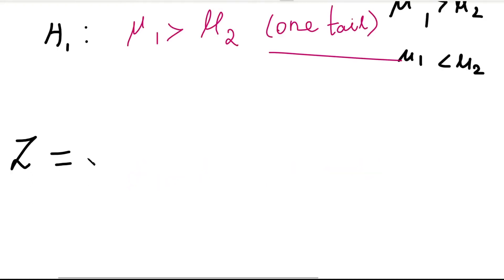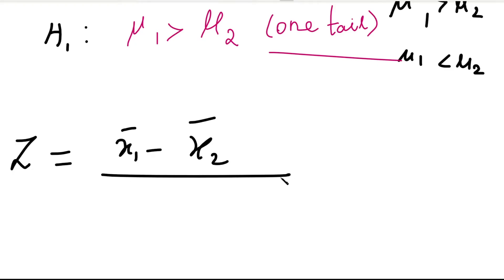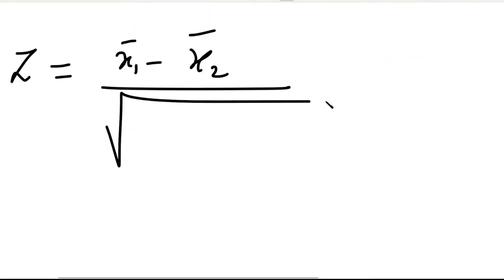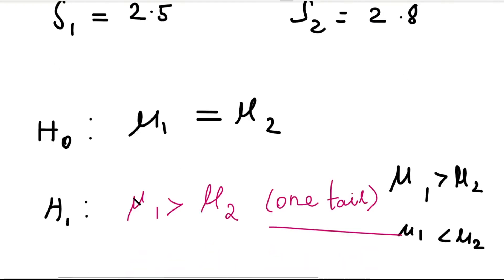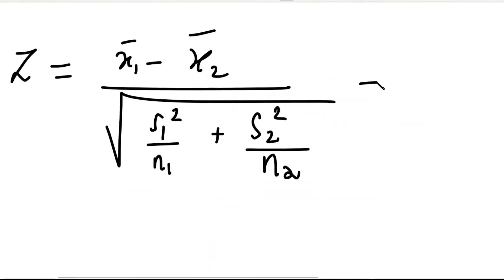The test statistic formula is: Z = (x1-bar minus x2-bar) divided by the square root of (s1² / n1 + s2² / n2). Substituting all values and simplifying, we get the calculated value of Z = 1.32.